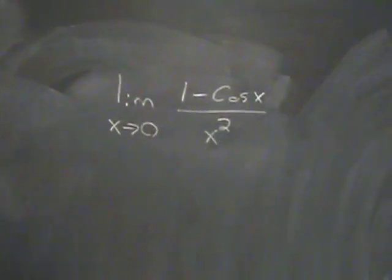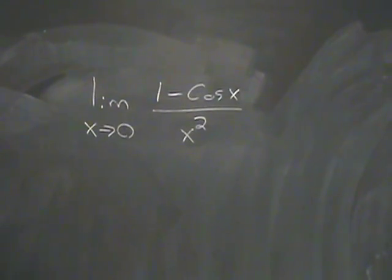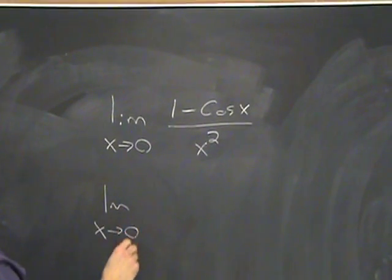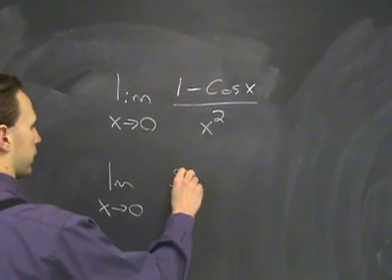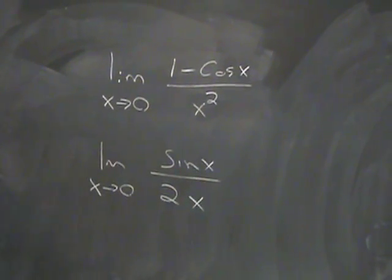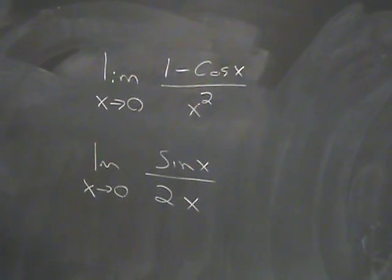Alright, another example here. Try to plug in 0, get 0 over 0. Let's do the rule. Limit as x goes to 0, derivative of the top is sine x, derivative of the bottom is 2x. You try to evaluate this, and once again, you get 0 over 0.